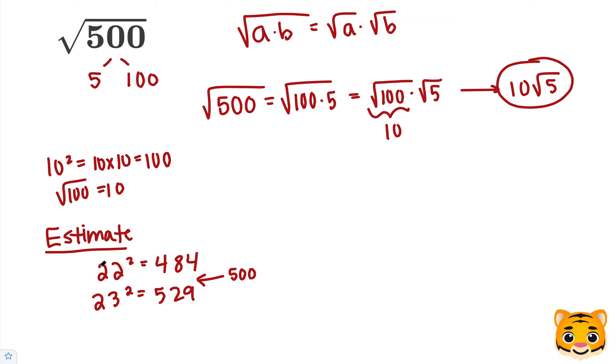So we can try values between 22 and 23 to obtain 500 to get close to the square root of 500. Let's try 22.5 times 22.5.